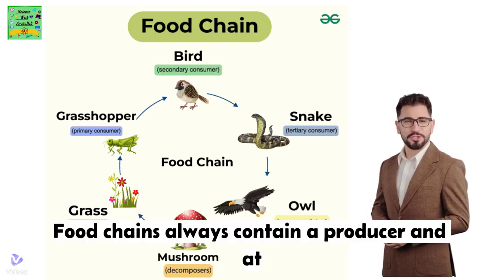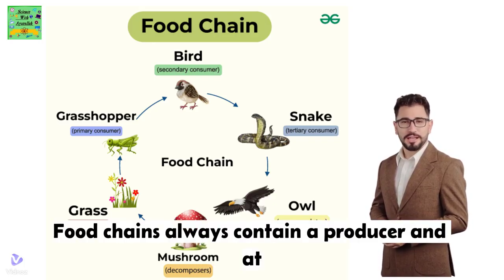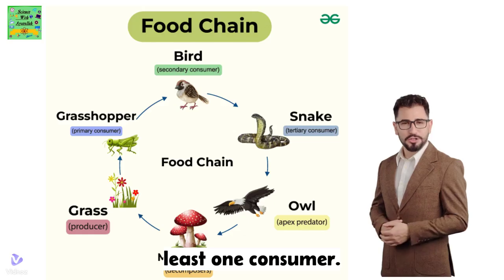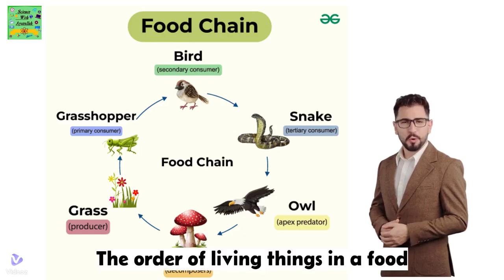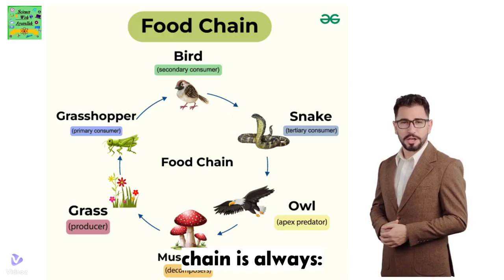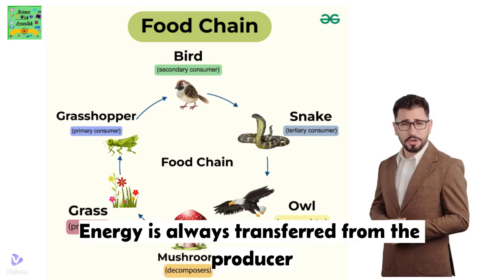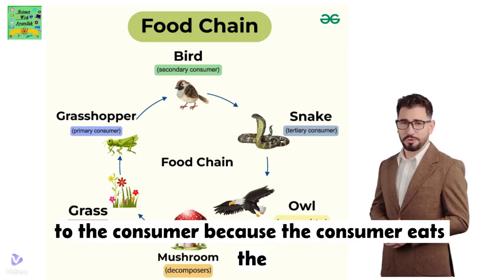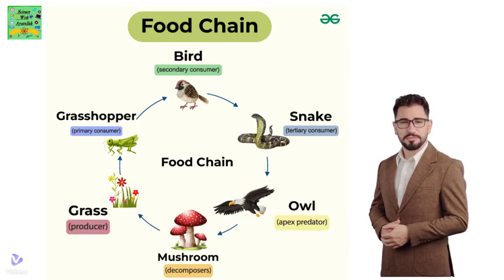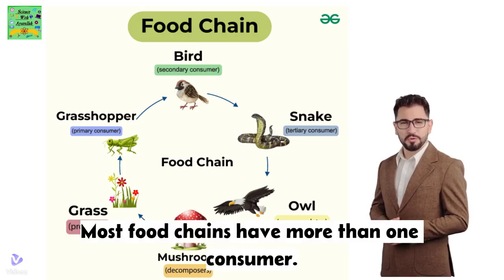Food chains always contain a producer and at least one consumer. The order of living things in a food chain is always producer-consumer. Energy is always transferred from the producer to the consumer because the consumer eats the producer. Most food chains have more than one consumer.